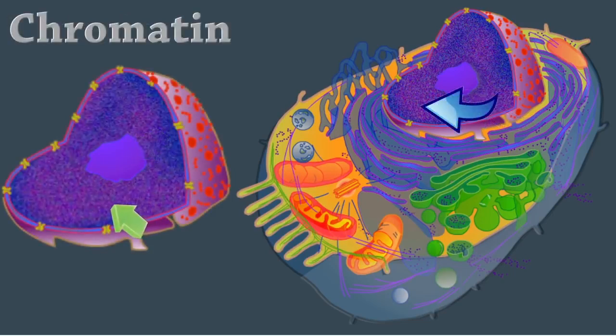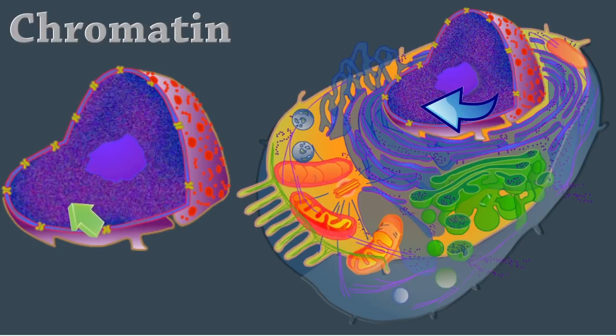Chromatin is a granular, thread-like material composed of DNA and histone proteins. Chromatin packages DNA into a smaller volume to fit into the cell, and it controls gene expression and DNA replication. Histones, part of the chromatin, compact the DNA for transport.